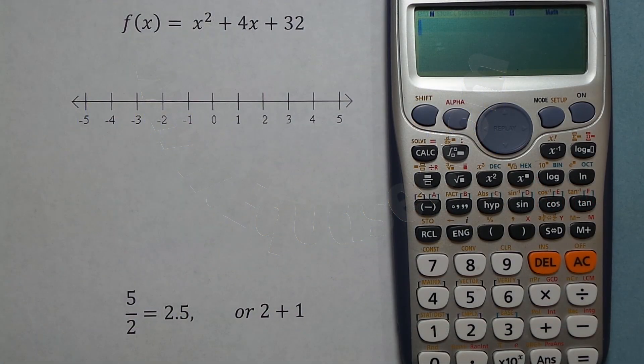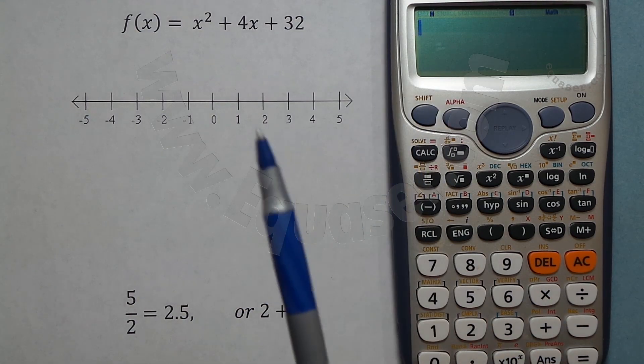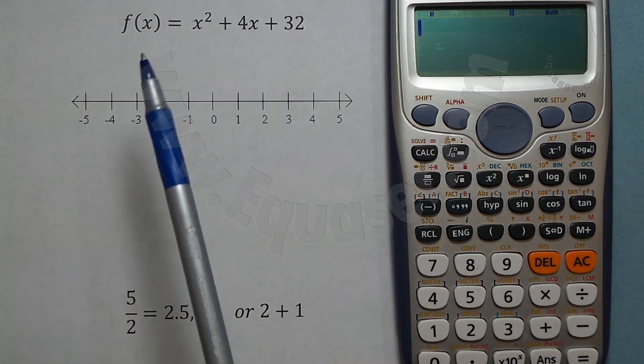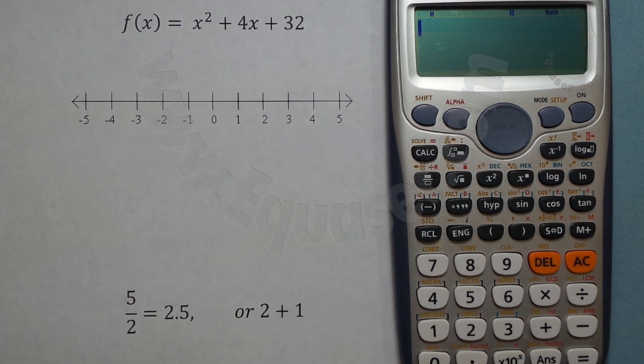Hello everyone. In this tutorial we're going to use this Casio calculator to generate a table of values for a given function. This is our function: f(x) = x² + 4x + 32.